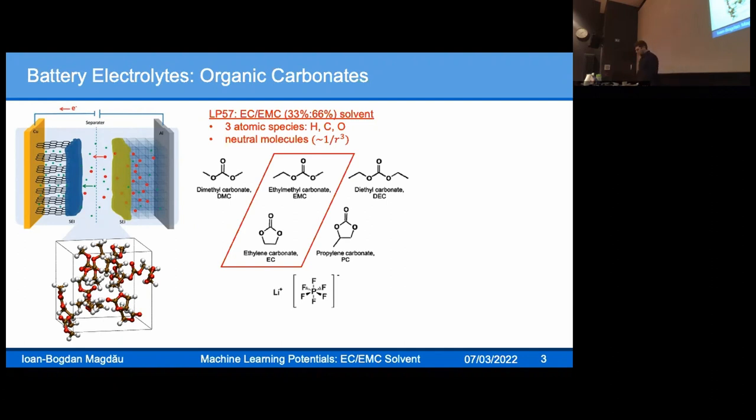We set ourselves an easier task at first, describing the pure solvent to start with. For lithium-ion batteries, one of the most important solvents used is this LP57, which contains two different organic carbonate molecules, EC and EMC, in this specific ratio, 33:66. This makes for a very good solvent.